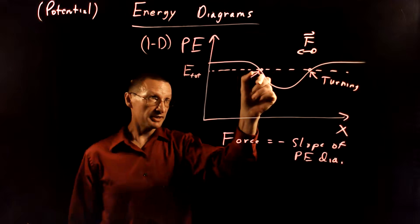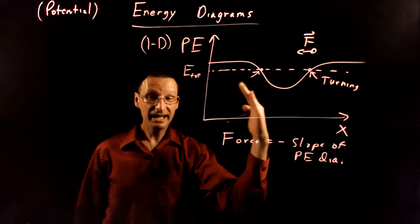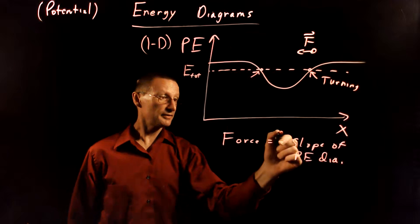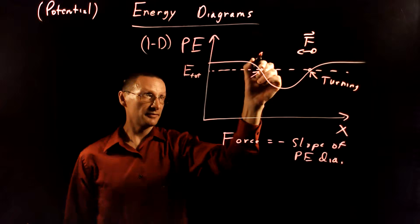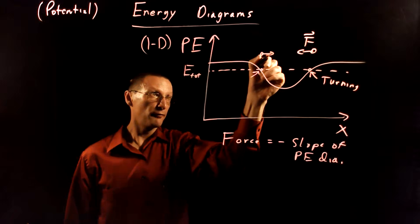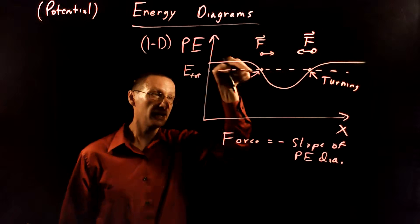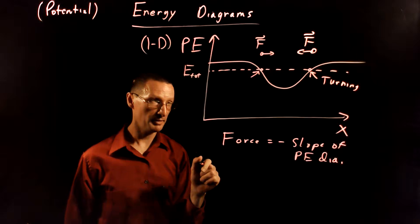Okay, so at this point, it's got a negative slope. Negative negative is positive. That means the force is positive. Positive is that way, so the force is going to point again back down towards the bottom of the valley.